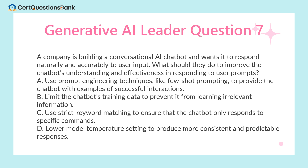A company is building a conversational AI chatbot and wants it to respond naturally and accurately to user input. What should they do to improve the chatbot's understanding and effectiveness in responding to user prompts? A. Use prompt engineering techniques, like few-shot prompting, to provide the chatbot with examples of successful interactions. B. Limit the chatbot's training data to prevent it from learning irrelevant information. C. Use strict keyword matching to ensure the chatbot only responds to specific commands. D. Lower the model temperature setting to produce more consistent and predictable responses. The answer is A.